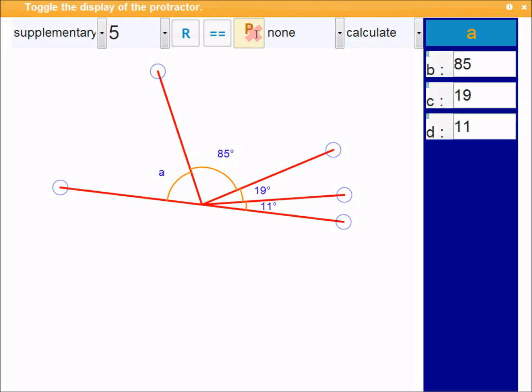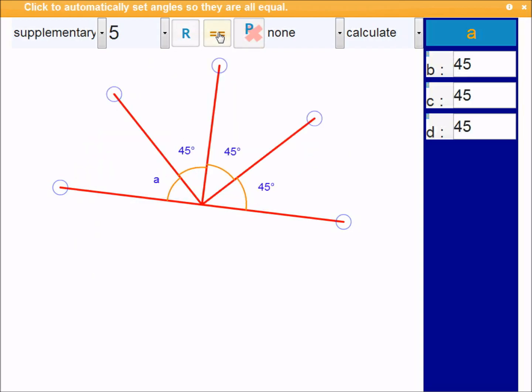Again, you can use the protractor indeed to actually measure the angle. That's really the exact same as the complementary, and you can use this equal button again as well.